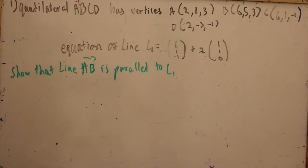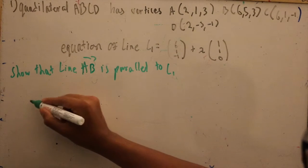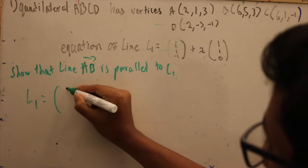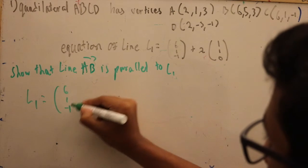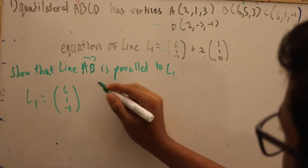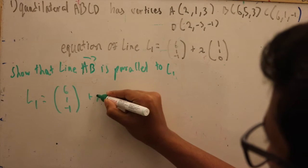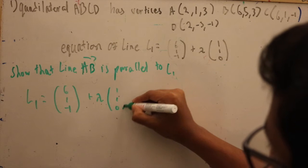Since we found the value for vector AB, the next question asks: is line AB parallel to line L1, where the equation for L1 is (6, 1, -1) and the direction vector for L1 is (1, 1, 0).